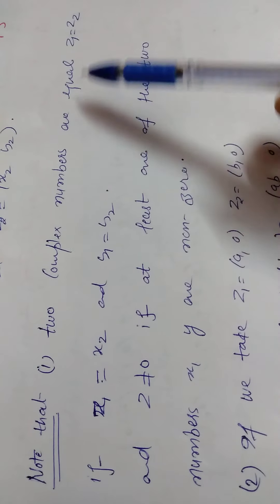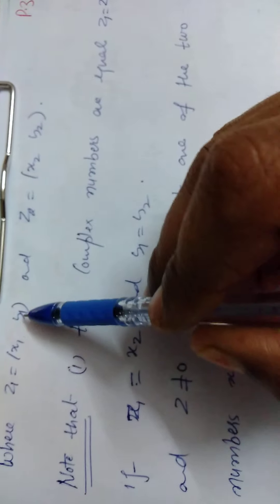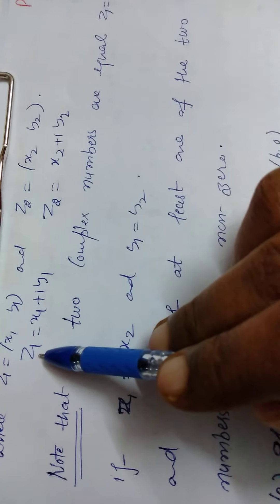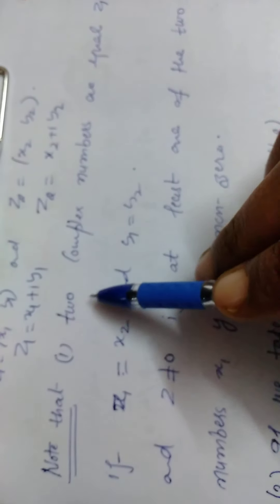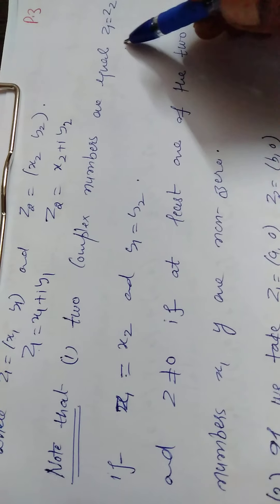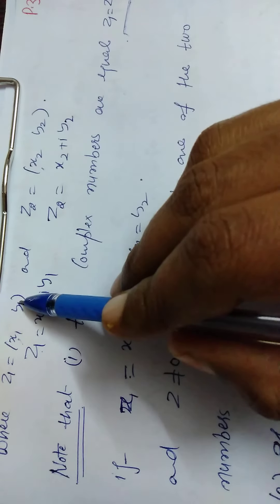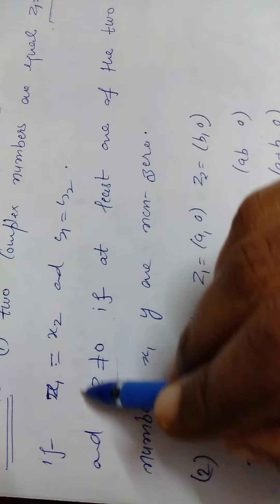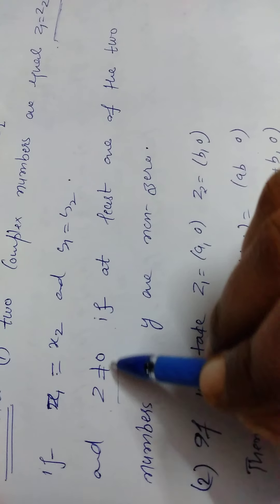We must note that two complex numbers z1 and z2 are equal if and only if the real part of z1 equals the real part of z2 and the imaginary part of z1 equals the imaginary part of z2. That is, z1 equals (x1, y1) and z2 equals (x2, y2) are equal if and only if x1 equals x2 and y1 equals y2.